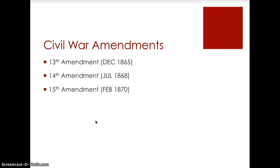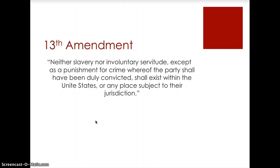For our purposes, the three important amendments to start with are the 13th, 14th, and 15th — commonly referred to as the Civil War amendments, passed within a five-year period following the end of the war between the Confederacy and the Union. The 13th Amendment is the one we commonly know for having ended slavery, stating that we cannot have any type of slavery in this society, except — interestingly enough — as a punishment for a crime, which is still upheld.